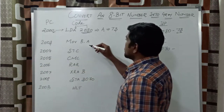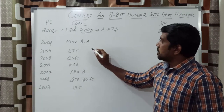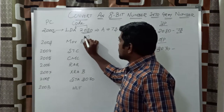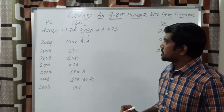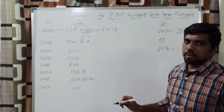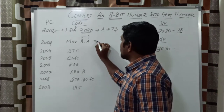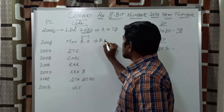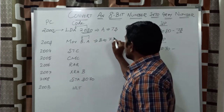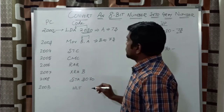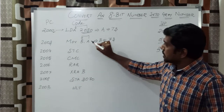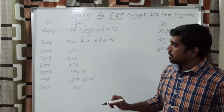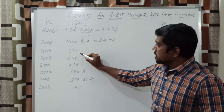The next instruction is MOV B, A. Whatever value is present in the accumulator, the content is transferred to the B register. After execution of this instruction, the B register content is 73. This simply copies the content from the accumulator to the B register.